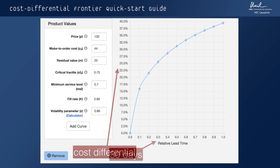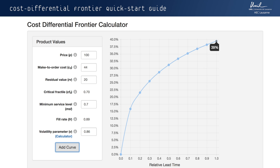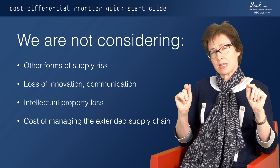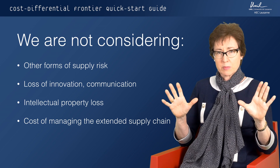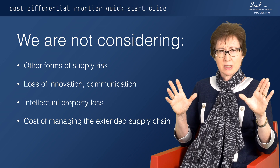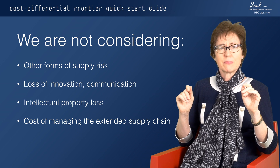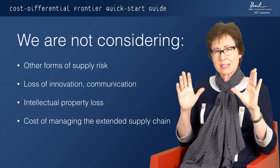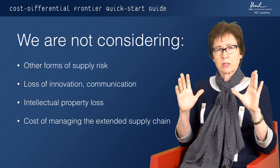On the vertical axis, we have the required cost differential. That tells us, for a given relative lead time, how much cheaper does the product have to be to compensate for that lead time? Here we see that the product coming with a relative lead time of one has to be 39% cheaper than the local make-to-order cost — just to break even. Keep in mind we're not considering any other forms of supply risk, such as difficulties with innovation, communication, or getting stuck at customs. This is only the exposure to demand volatility.